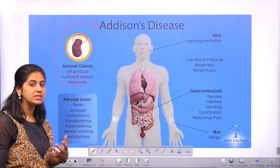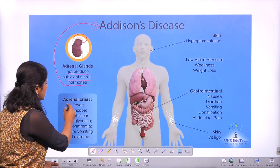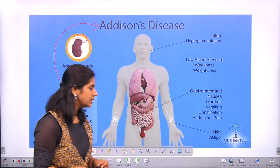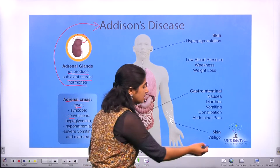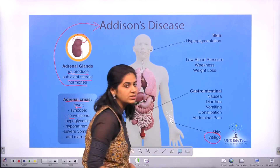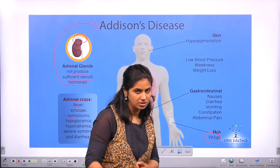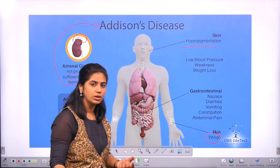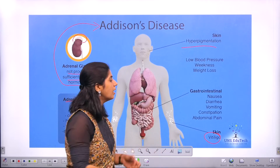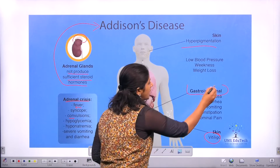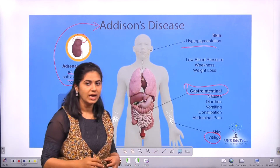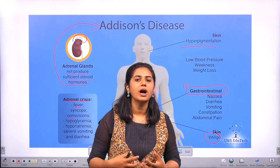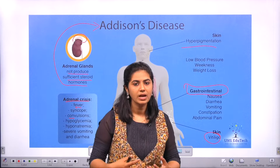Addison's disease has many symptoms such as adrenal crisis, which may result in fever, convulsions, and hypoglycemia. Other symptoms are seen in the skin — it may result in vitiligo, where pigmentation is very low causing white patches, or it may lead to hyperpigmentation. It may also cause low blood pressure, weight loss, and gastrointestinal problems including digestive disorders.